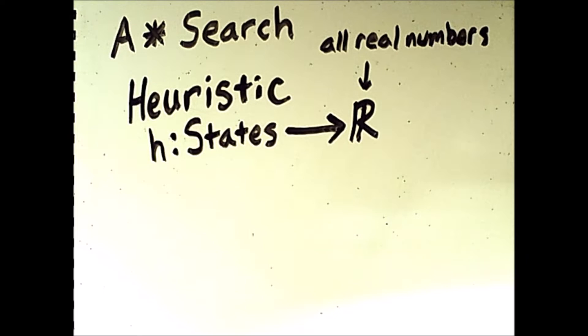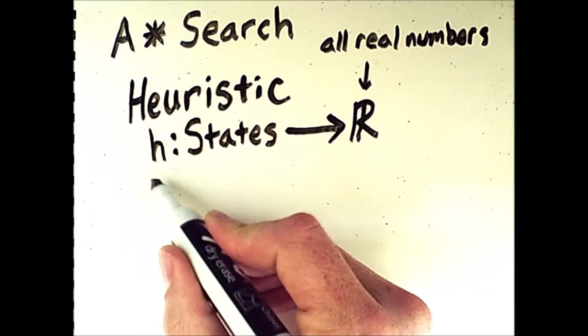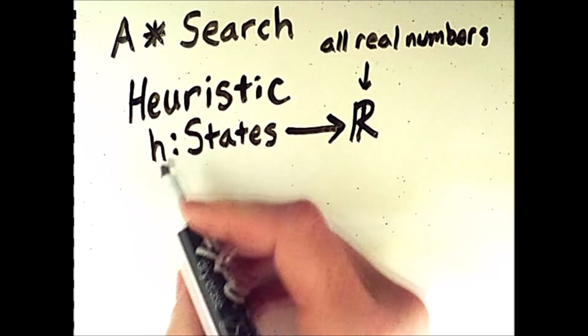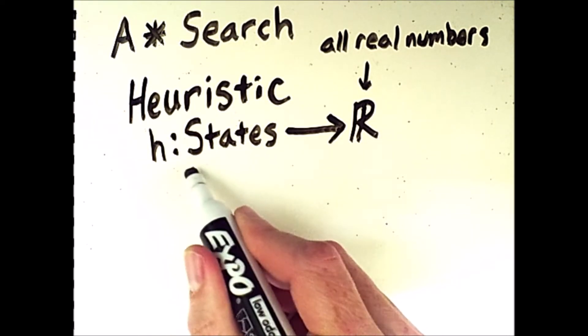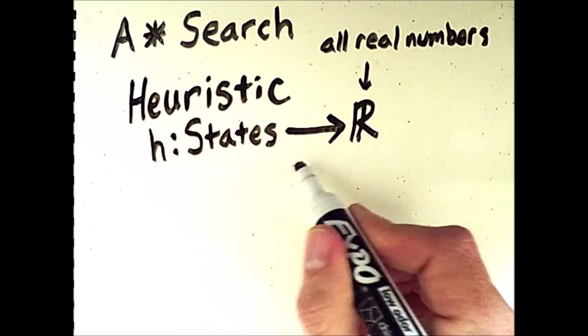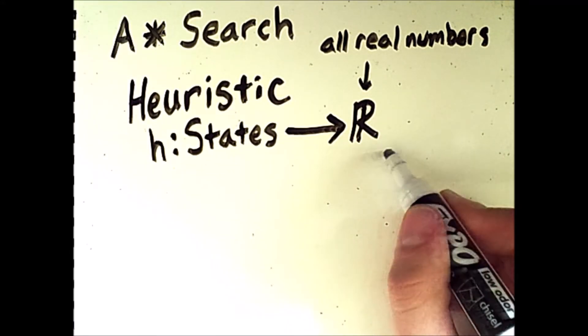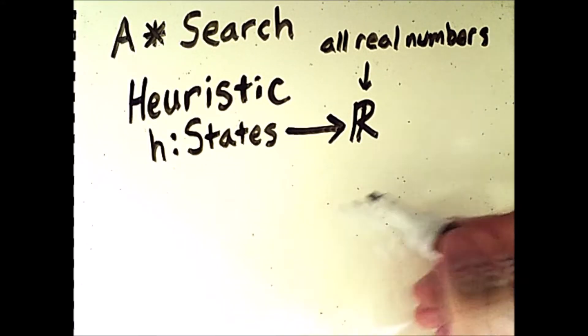So here we have a bit of notation indicating that we have a function which happens to be named h, and that function maps from the set of states to the set of real numbers, represented by this typeface R.